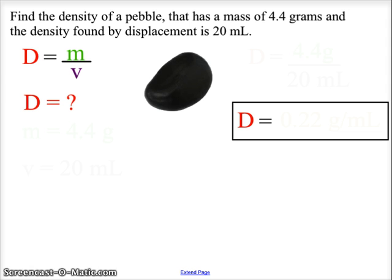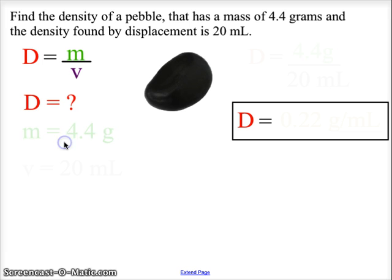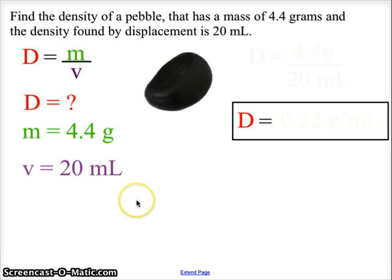Here is the equation: find the density of the pebble that has a mass of 4.4 grams, with a volume found by displacement of 20 milliliters. Our formula is d equals m over v, and we're searching for density. The first thing we do is identify our knowns — a 4.4 gram pebble and 20 milliliters of volume obtained by displacement.